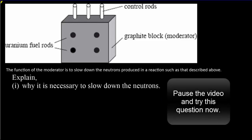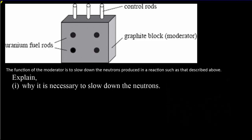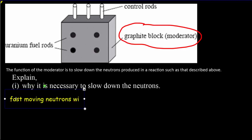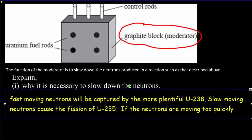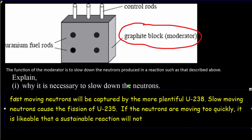Okay, one last question. What I'd like you to do is to read over the question, try it out for yourself, and then come back for the answer. Okay, so we're being asked about the moderator. Notice that we have a graphite block or a carbon moderator in this case. So a moderator doesn't always have to be water. So why is it necessary to slow down the neutrons? So you've got to remember here that fast-moving neutrons will be captured by the more plentiful uranium-238. Slow-moving neutrons cause the fission of uranium-235. If the neutrons are moving too quickly, it is likely that a sustainable reaction will not be produced.